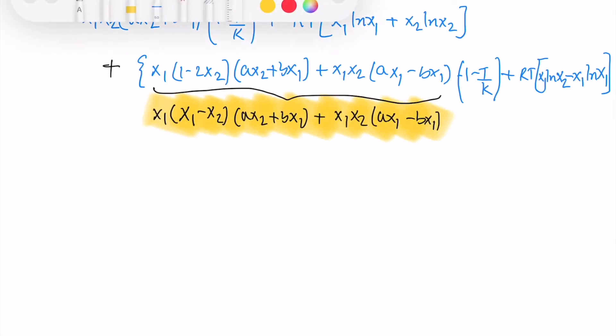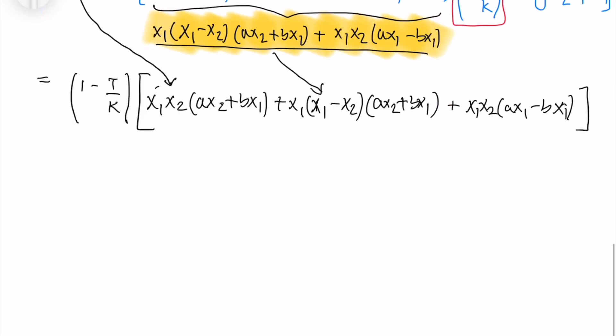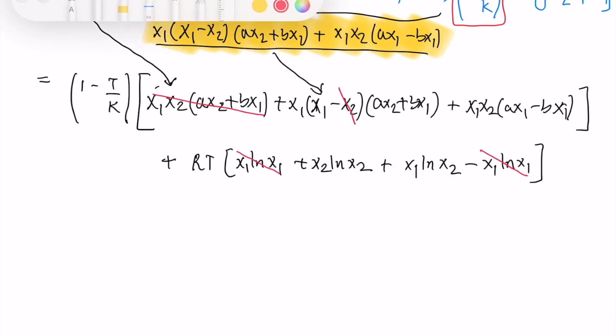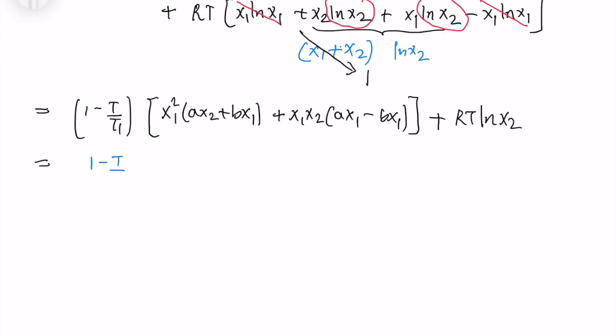So that I can cancel out the terms. So I will take 1 minus T by K constant outside and write down the terms. So I can cancel out few terms which I will tell later. So I cancel few terms and now I am simplifying the RT ln term.